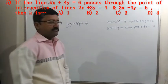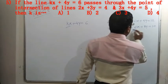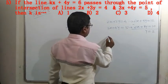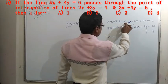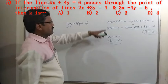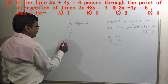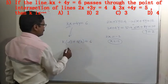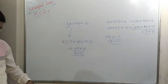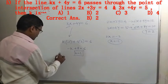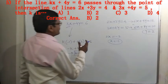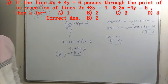Subtracting gives y = 2. Substituting y = 2 into 2x + 3y = 4 gives 2x = 4 - 6 = -2, so x = -1. The intersection point is (-1, 2). Substituting into kx + 4y = 6: k(-1) + 4(2) = 6, giving -k + 8 = 6, so k = 2. The correct answer is option B.